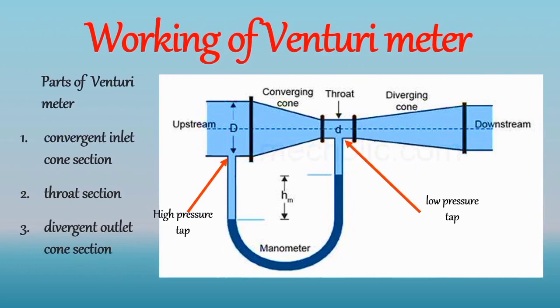Now Venturi tube is most preferred for flow measurement of slurries and liquid containing solid, provided the pressure tap is protected from plugging. Well since the flow area smoothly changes, the pressure recovery of Venturi is better than orifice.